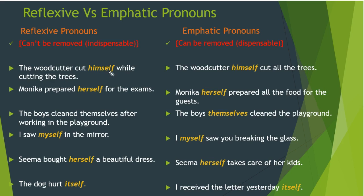The woodcutter cut himself — he cut himself while cutting trees. But in 'The woodcutter cut all the trees', the meaning is already complete. If we add 'himself' — 'The woodcutter himself cut all the trees' — it adds emphasis that he did it without anyone's help. So 'himself' is a reflexive pronoun in the first sentence and an emphatic pronoun in the second. Next: 'Monica prepared herself for the exams' — Monica prepared herself, swayam ko, for the exams.